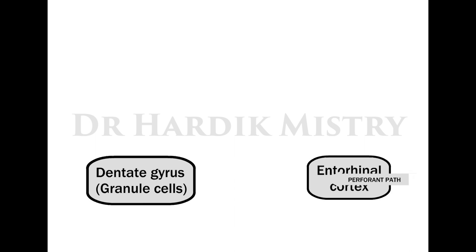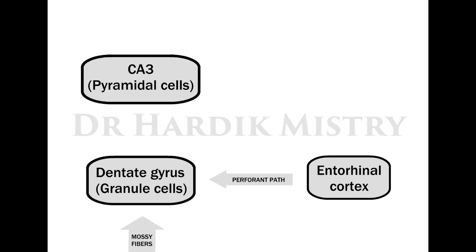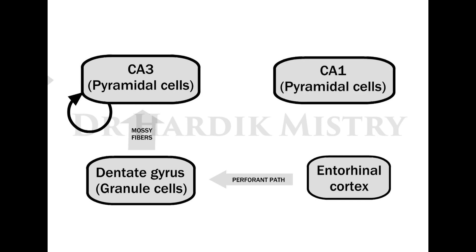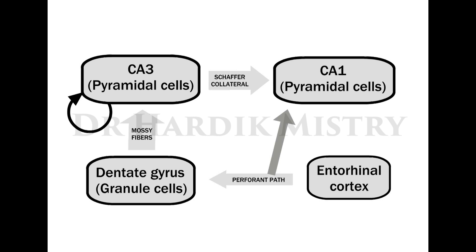Fibers from the entorhinal cortex make synapses with granule cells in the dentate gyrus — these fibers are known as the perforant path. Axons of granule cells make synapses with CA3 pyramidal cells. Axons of CA3 pyramidal cells make recurrent synapses with other pyramidal cells and also make synapses with CA1 pyramidal cells via Schaffer collaterals. CA1 pyramidal cells also receive inputs from the perforant path, giving them two inputs.